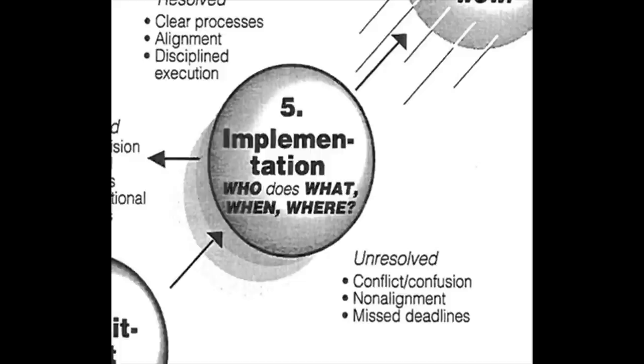We get into implementation, and this is the realm of management — who does what, when and where. It's systems, processes, disciplined execution. If you've made it through the trust stage and through goals and roles, but you aren't really clear on implementation, this is where conflict can emerge again and needs to be resolved. That's what's shown on the unresolved side.